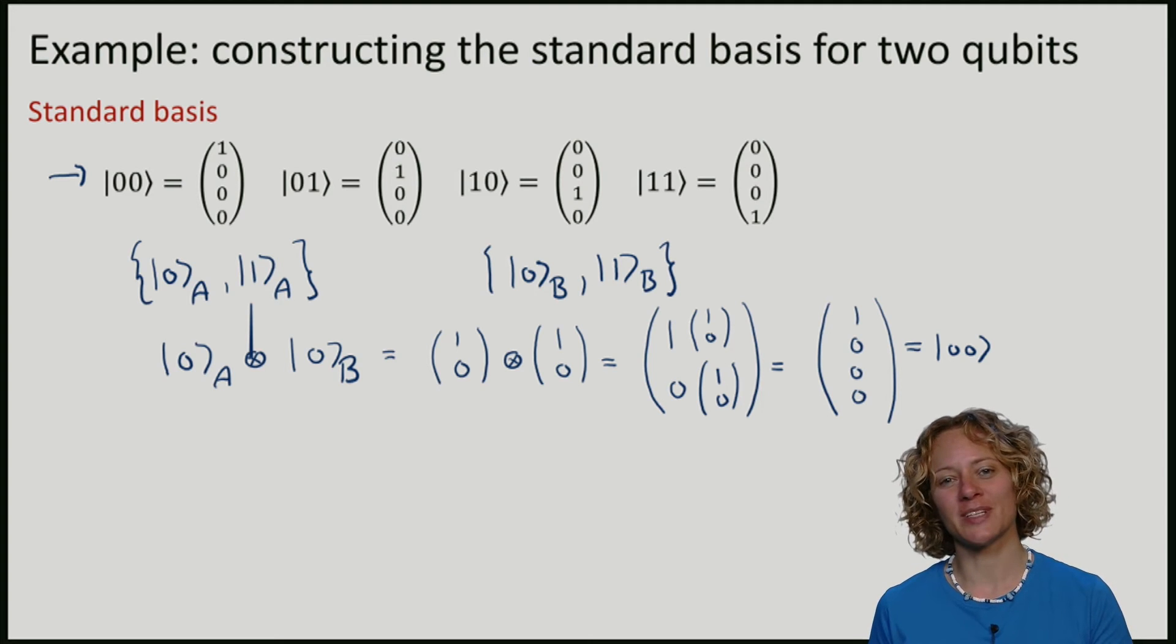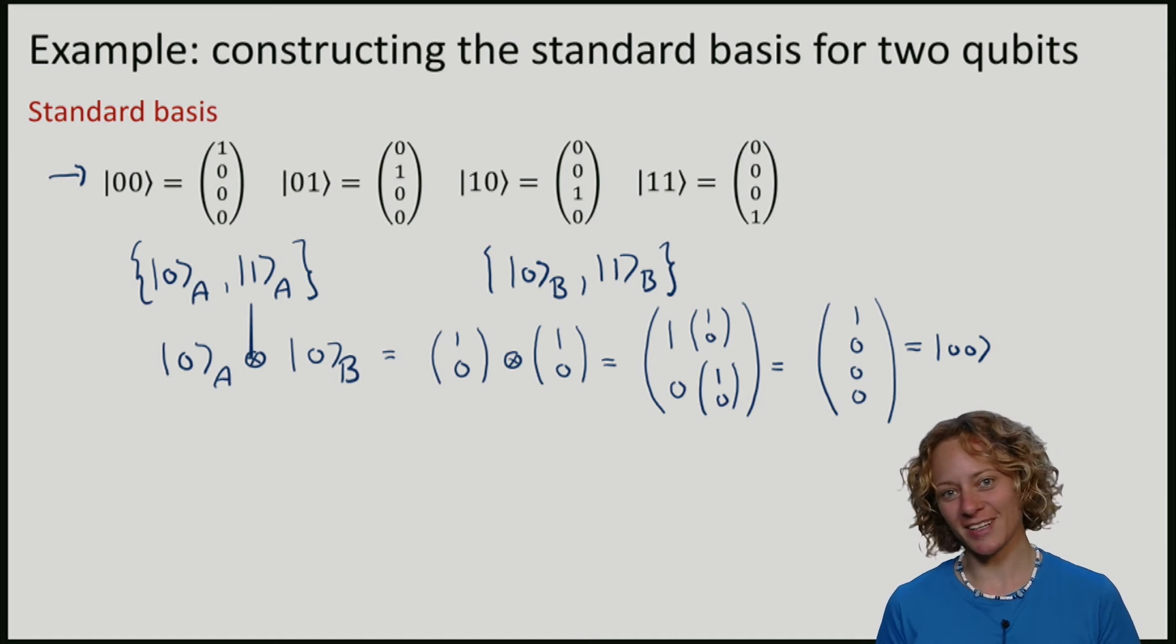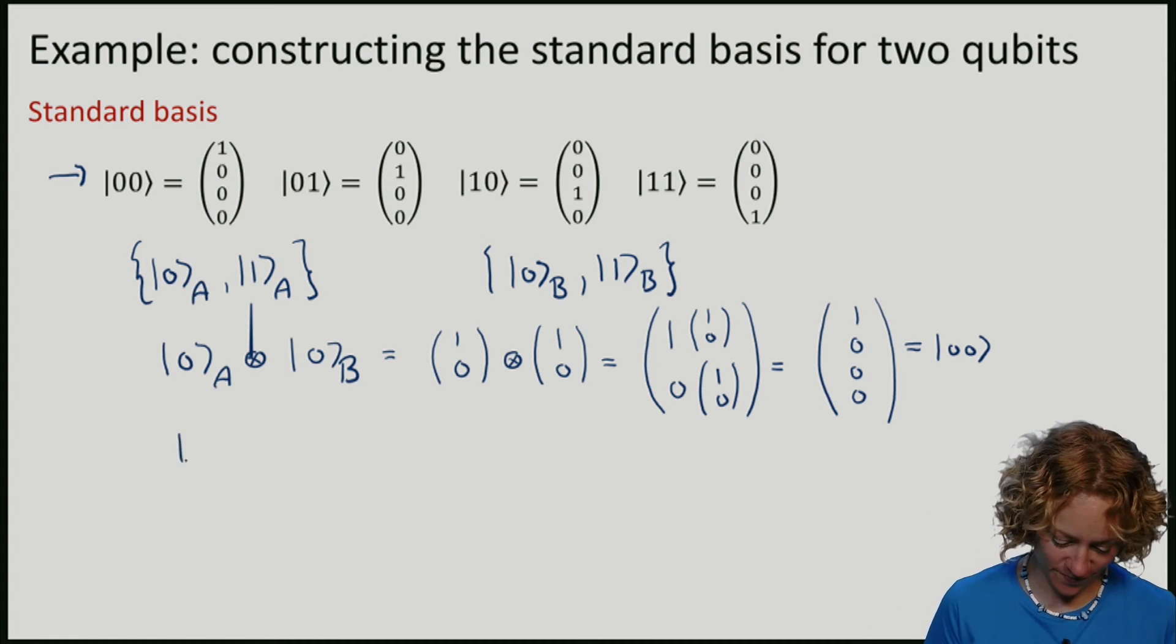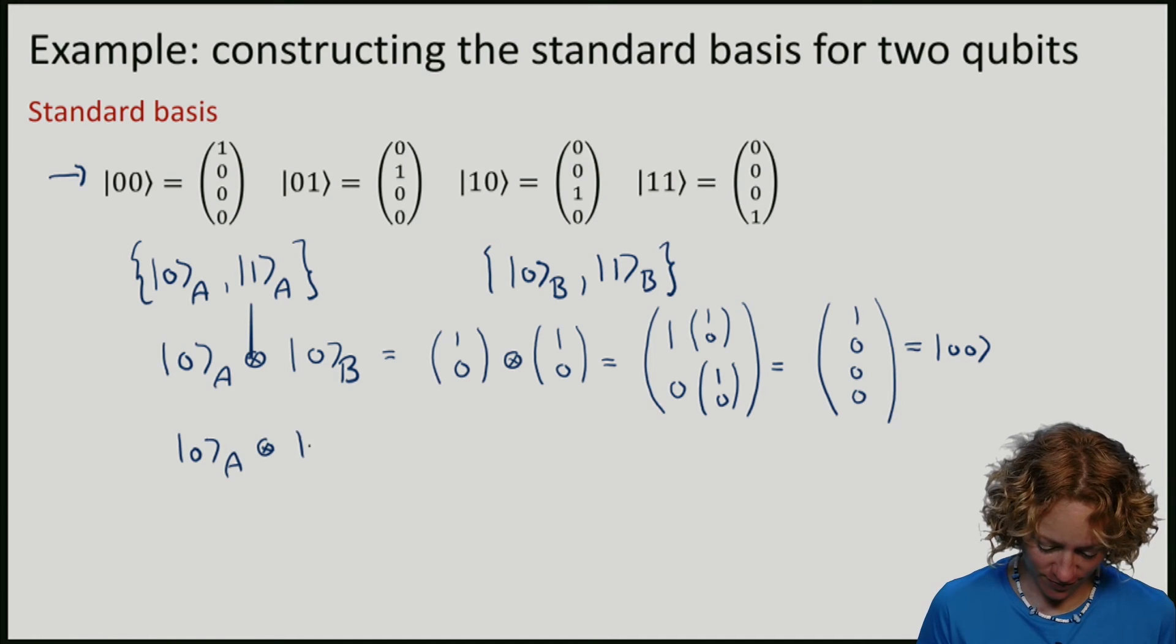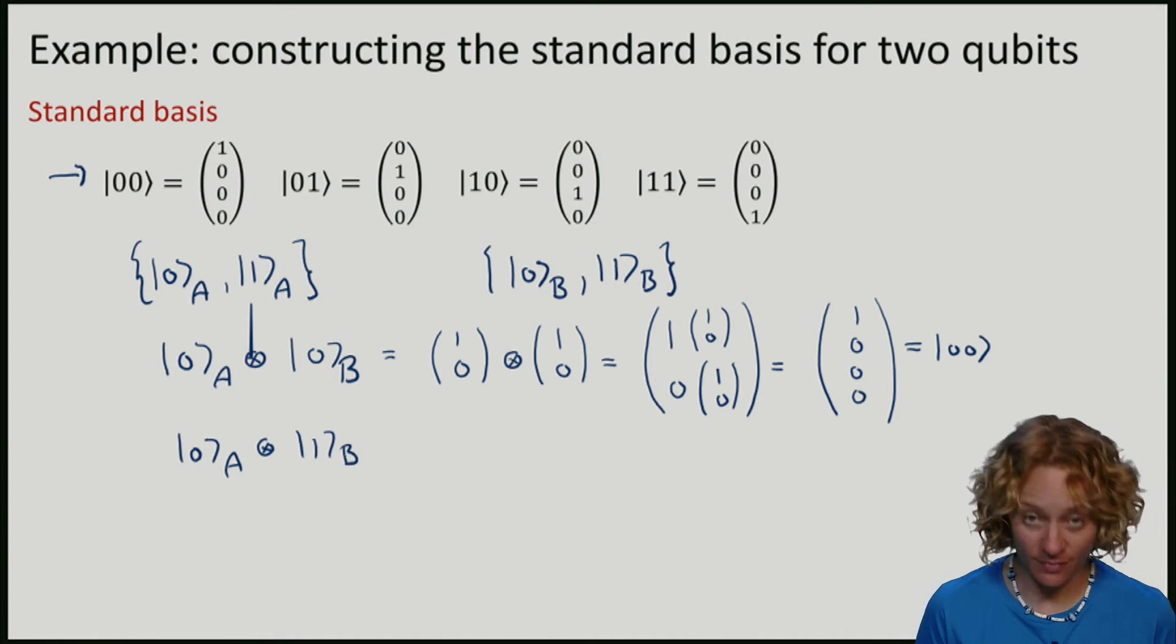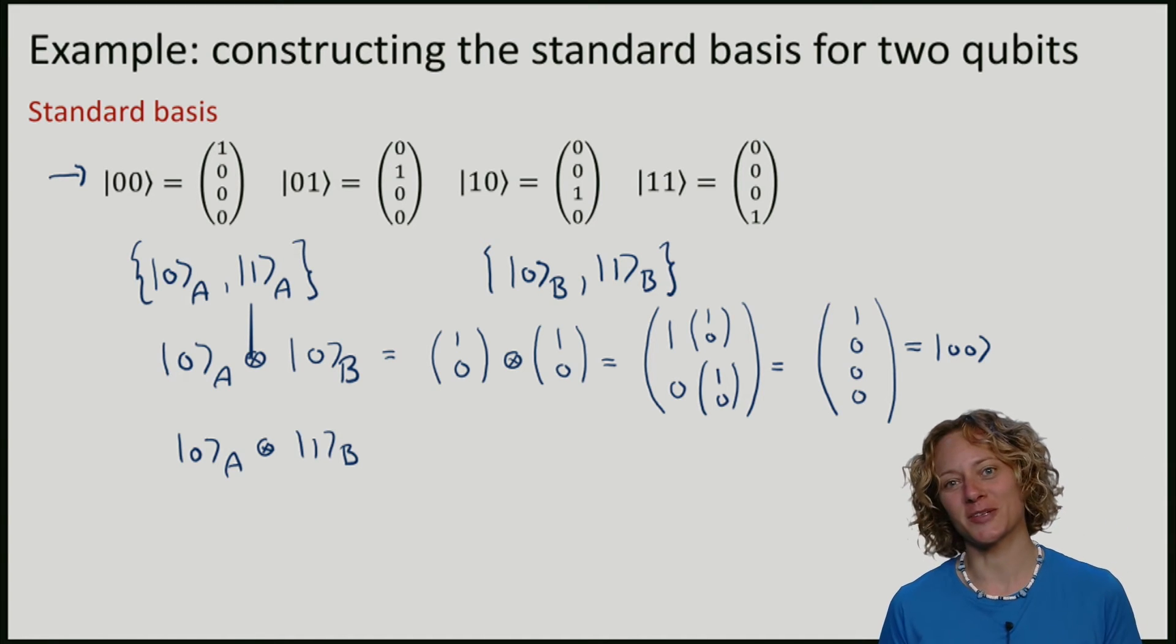I encourage you to try and form the other vectors of the qubit standard basis by taking a tensor product of for example 0 and 1 and all other combinations.